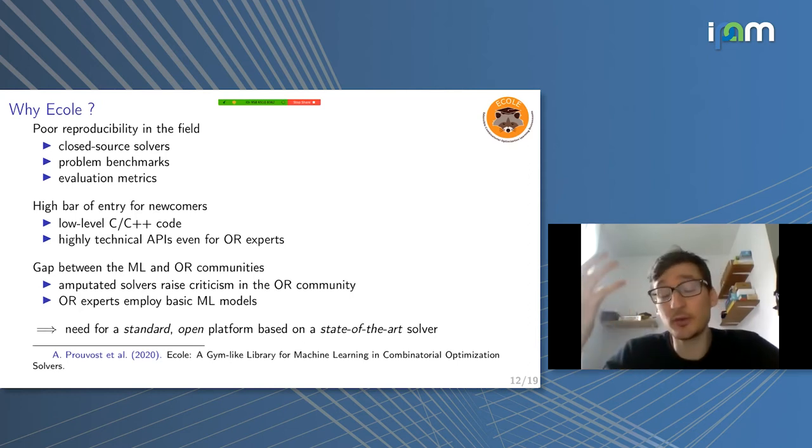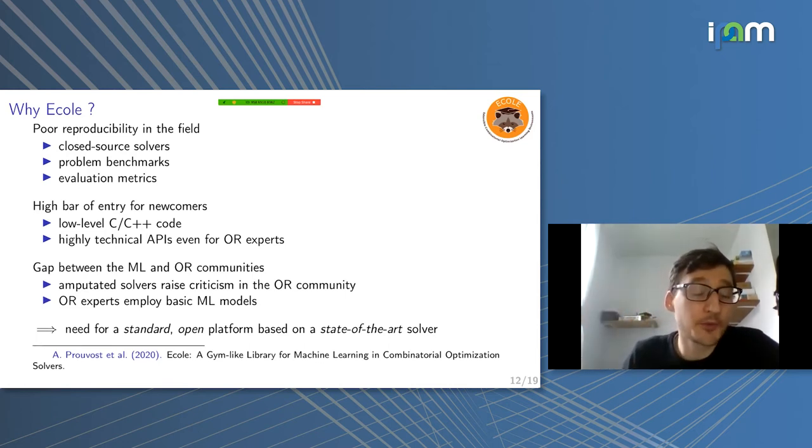If you want to, let's say you have a new idea for learning to branch, and you want to compare to the competitors, to the previously proposed approaches, it's going to be super hard for you to do just because you have to re-implement everything basically. It's not a fair way to compare. So that's an issue.